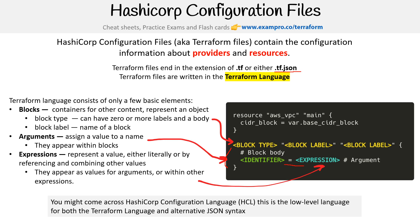You might come across HashiCorp Configuration Language, or HCL. This is the low-level language for both the Terraform language and the alternative JSON syntax. It's basically the Terraform language, so if you see HCL, just think Terraform language — that's the easiest way to think about it.